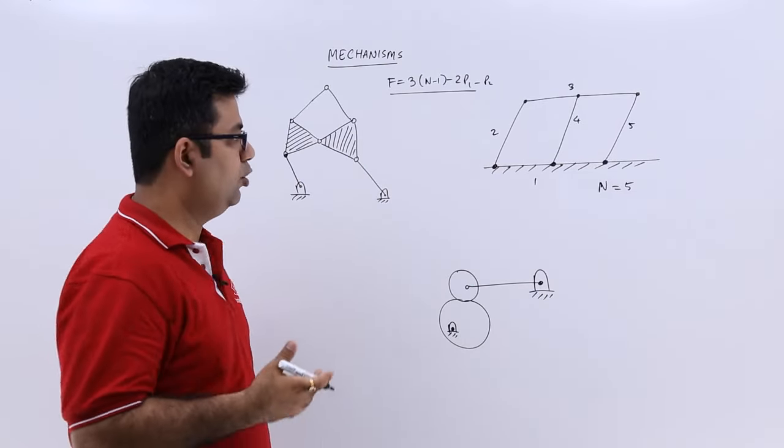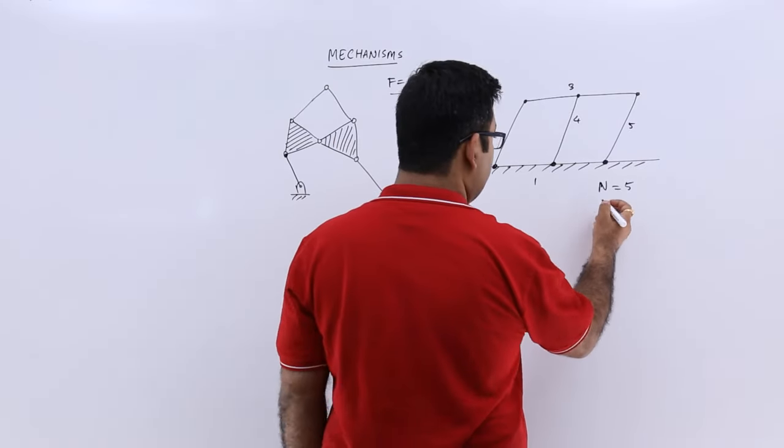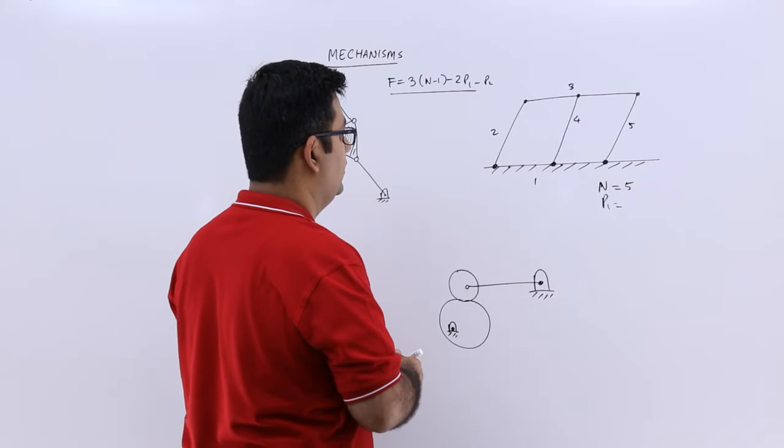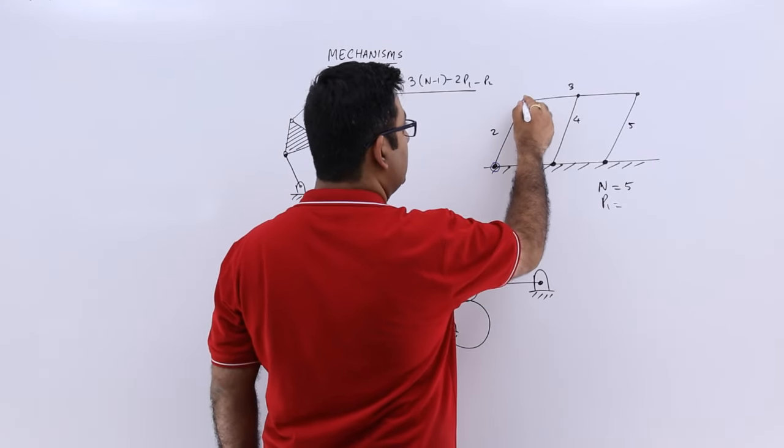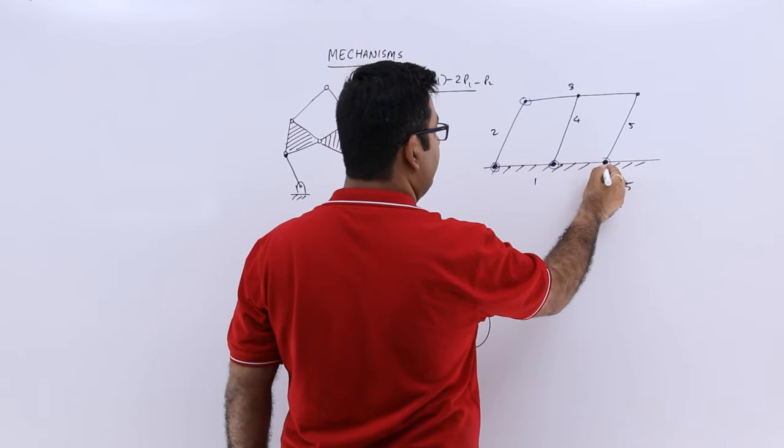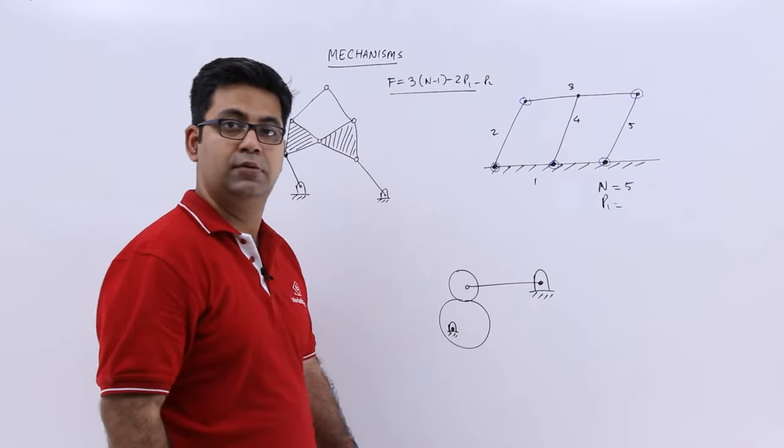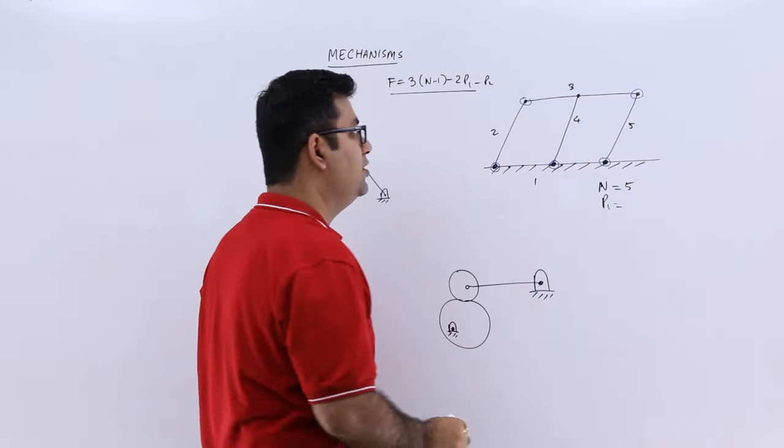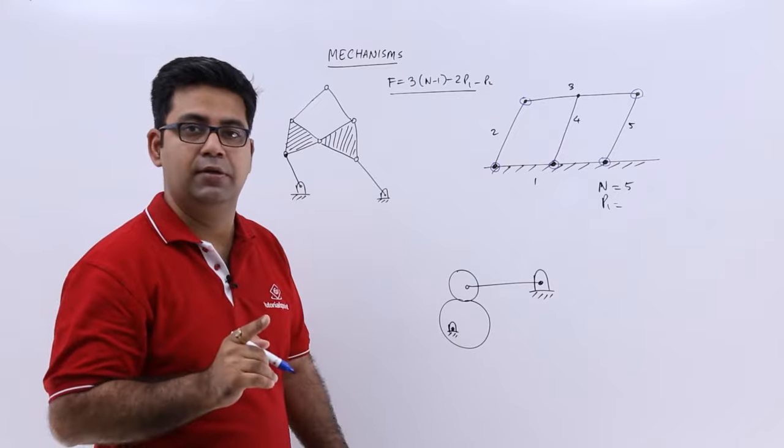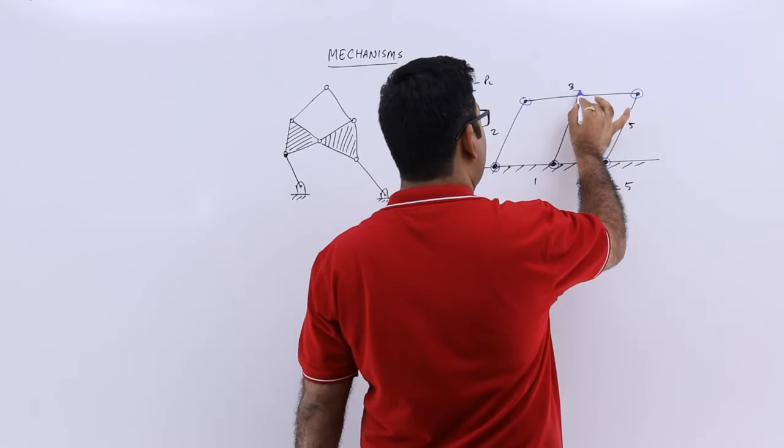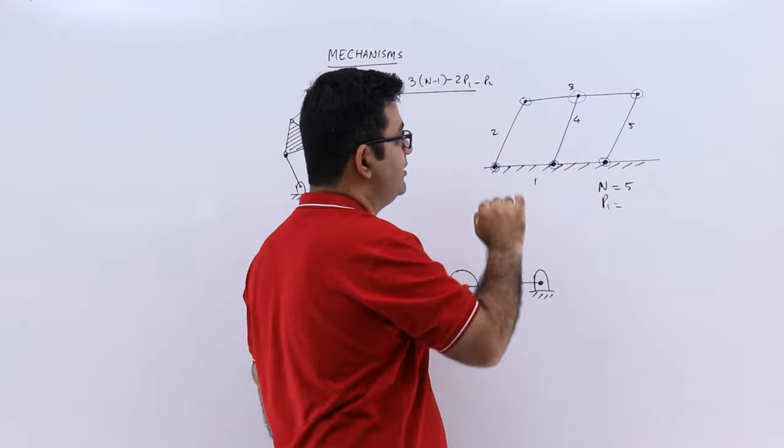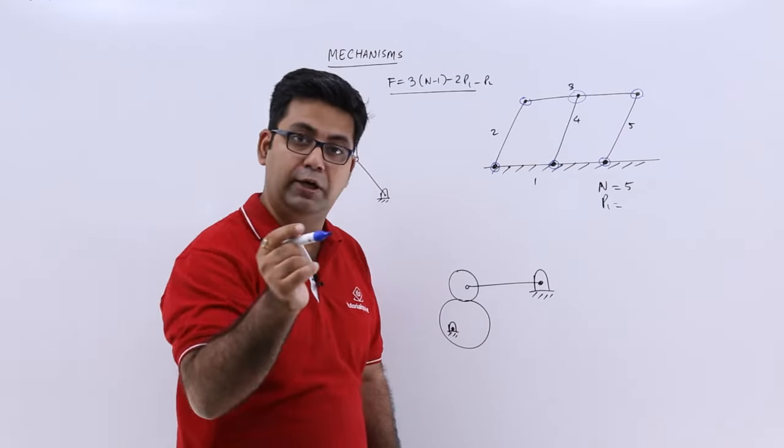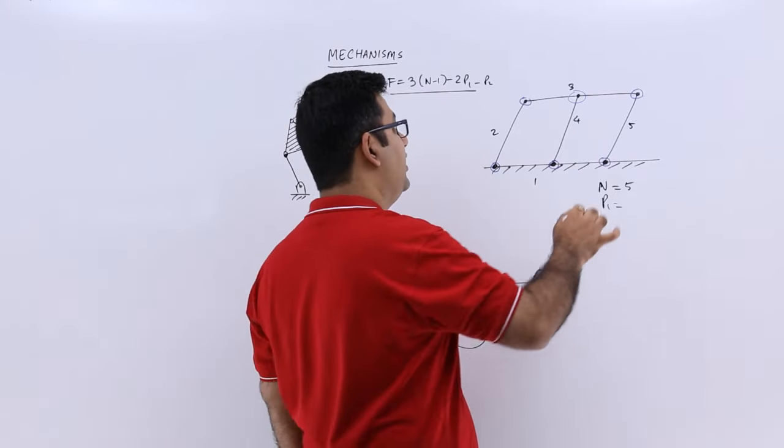Let us find out the total number of lower pairs or one degree of freedom, it will be p1. You will have 1, 2, 3, 4, 5. Most of you would also choose this as a single degree of freedom, so that is incorrect. This would be a two degree of freedom because at this point this joint will also have a certain amount of slippage in addition to the turning effect. So this will be p2.